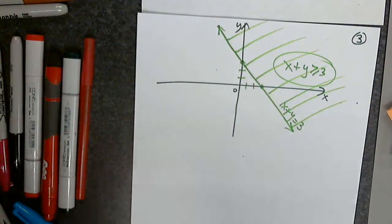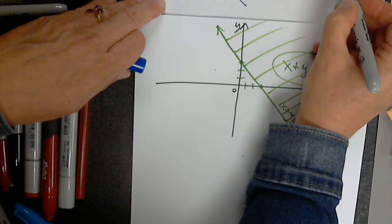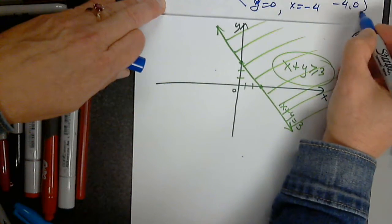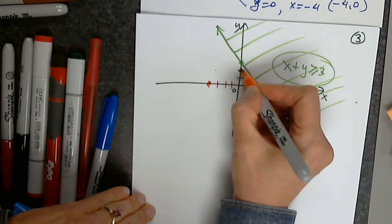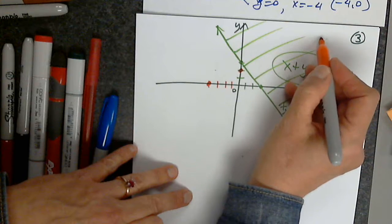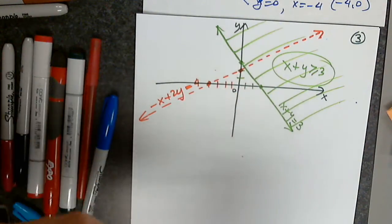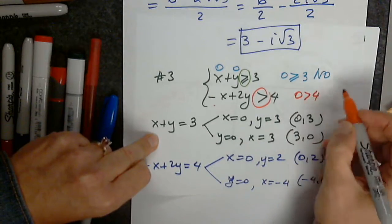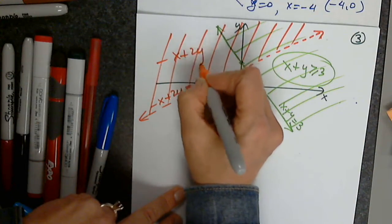For negative x plus 2y equals 4: when x equals 0, y is 2, so the point is (0, 2). When y equals 0, x equals negative 4, so the point is (-4, 0). However, this inequality symbol does not have the equal symbol, so I cannot graph this line as a solid line. Again, checking (0, 0): 0 greater than 4? No. So this shaded region represents negative x plus 2y greater than 4.